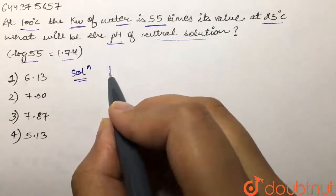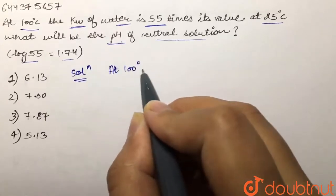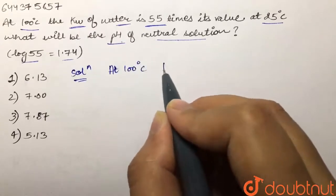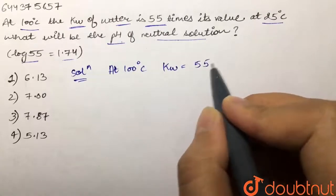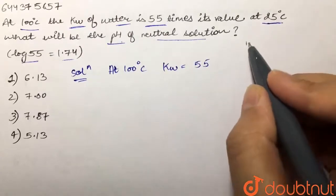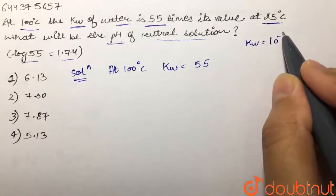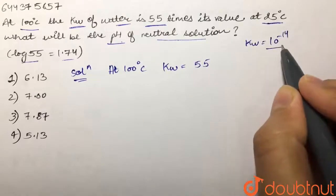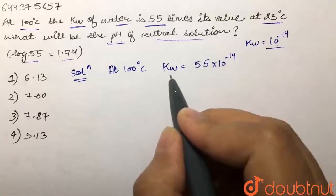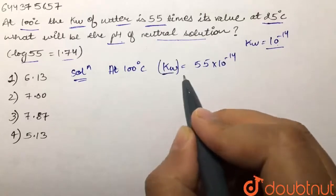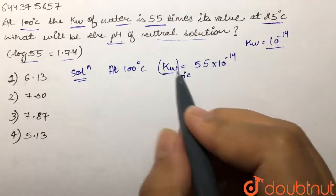The given condition is that the Kw of water at 100°C is 55 times its value at 25°C. The Kw value at 25°C is 10 raised to power minus 14, so Kw at 100°C equals 55 × 10⁻¹⁴. This is our Kw value at 100 degrees Celsius.